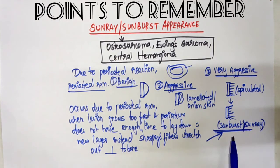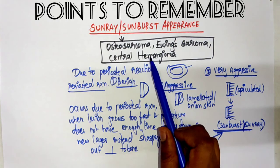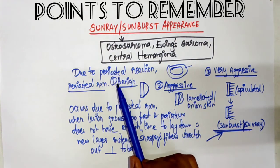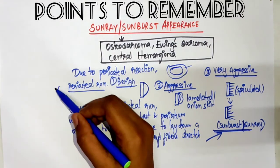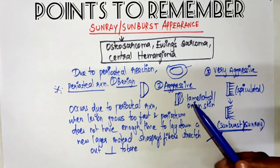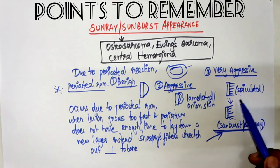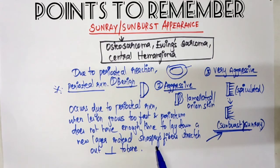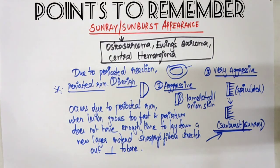You need to mention that this appearance is usually seen in osteosarcoma, Ewing's sarcoma, or central hemangioma, and that it is due to the periosteal reaction. You also need to know what happens in benign, aggressive, and very aggressive lesions, and that the sunray or sunburst appearance is mainly caused by Sharpey's fibers being stretched out perpendicular to the bone during periosteal reaction.